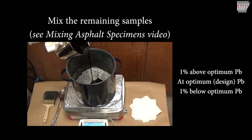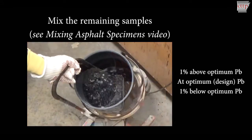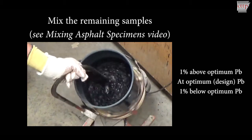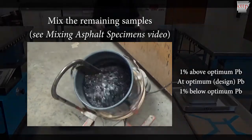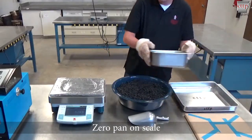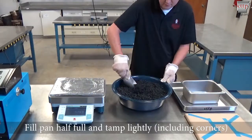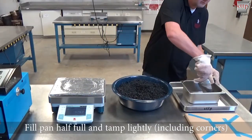Mix the remaining samples at the optimum, optimum minus 1%, and optimum plus 1% binder contents. The optimum binder content is shown on the approved mix design. After mixing, zero a gauge sample pan on the scale, then fill the pan with the asphalt mixture. Remember to keep track of which pan contains which binder content.